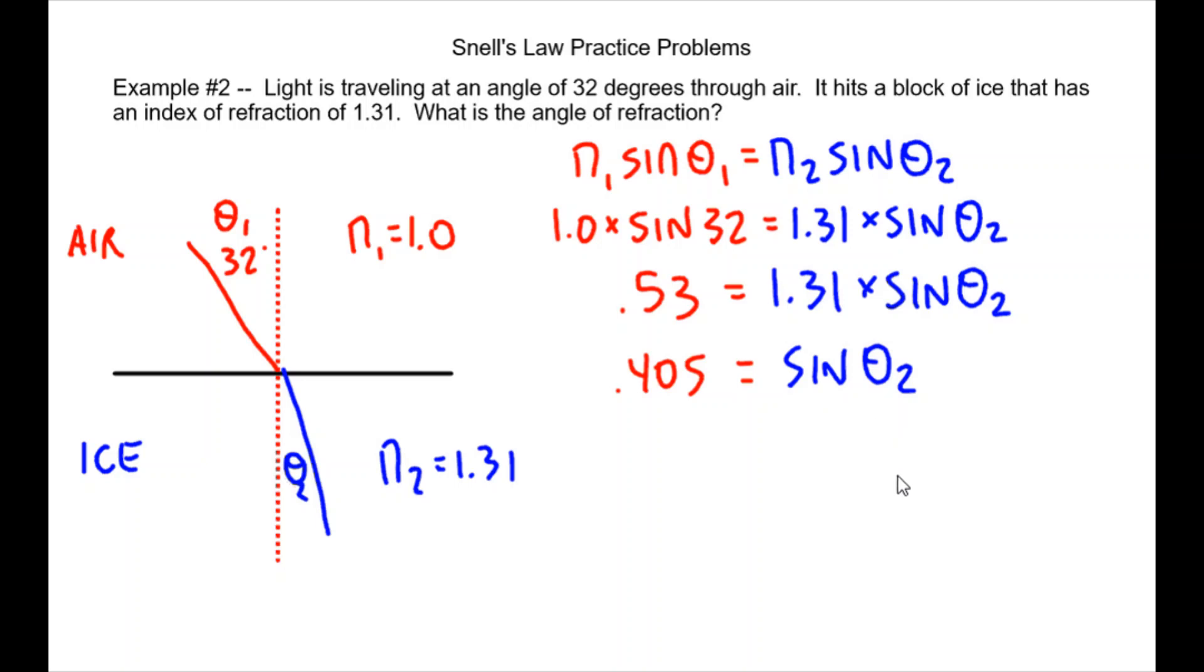Now we've got to be careful here, this is a little trickier. We need to get this angle by itself so we've got to get rid of sine. And in order to do that you take the inverse sine of both sides. The inverse sine will cancel out the sine on the right and we're left with the inverse sine times 0.405. It's kind of like dividing by sine to get this angle by itself. You take the inverse sine of both sides, cancel it out on the right, and then you're left with the inverse sine of 0.405.